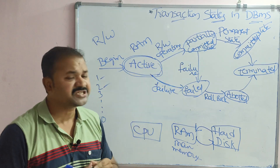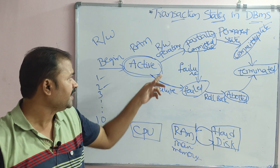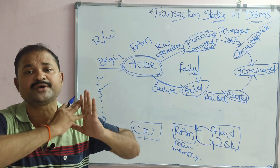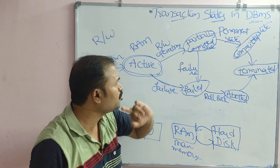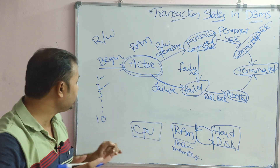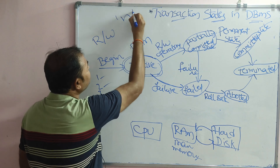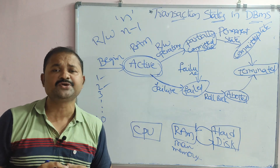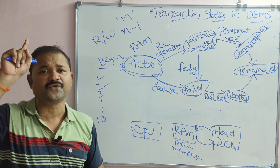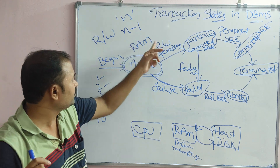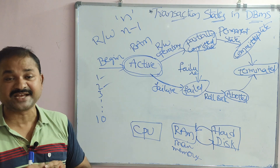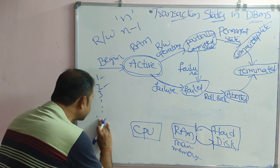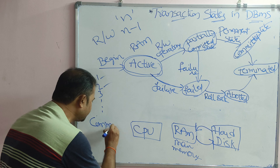What is partially committed state? If the read and write operations of a transaction are completed successfully without any problem, the transaction goes into the partially committed state. Partially committed state means that if there are n instructions, then n minus 1 instructions have been executed successfully and only one instruction remains to be executed. That remaining instruction is the commit instruction.